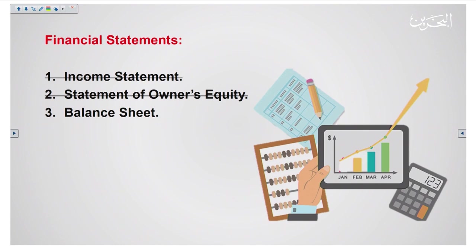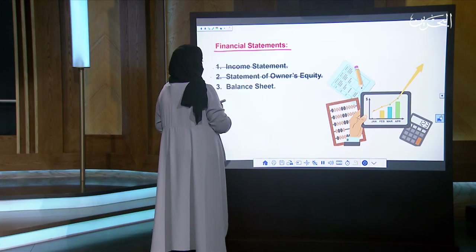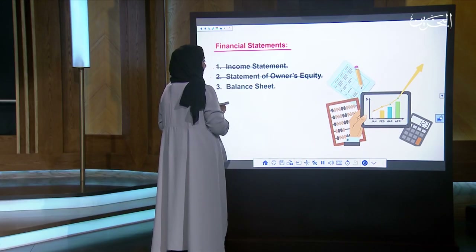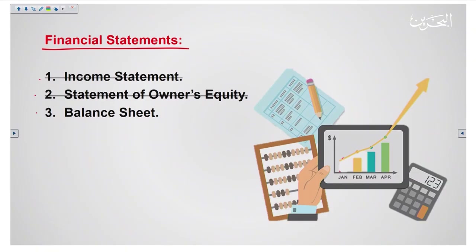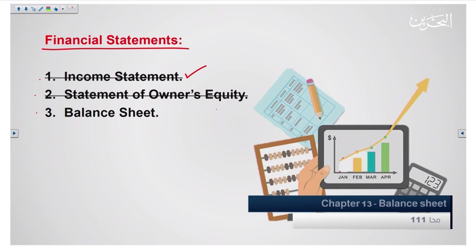If you remember, we have talked about the three important financial statements which are the income statement, statement of owner's equity, and the balance sheet. These three statements are linked together so we have to prepare them one by one. In the previous lessons we learned how to prepare the income statement and the statement of owner's equity, and today we are going to learn how to prepare the balance sheet.